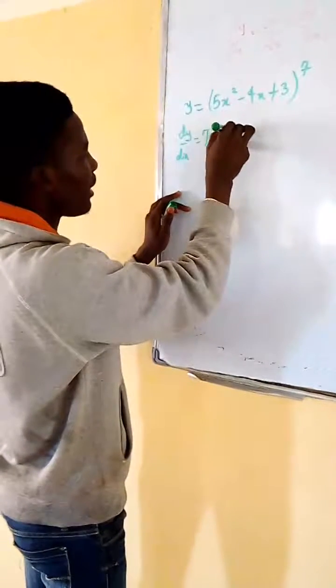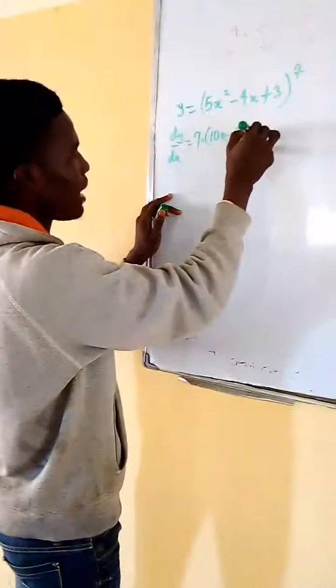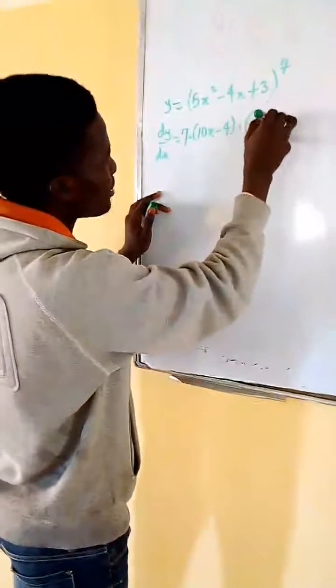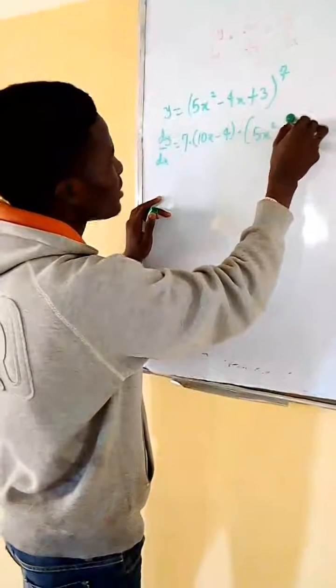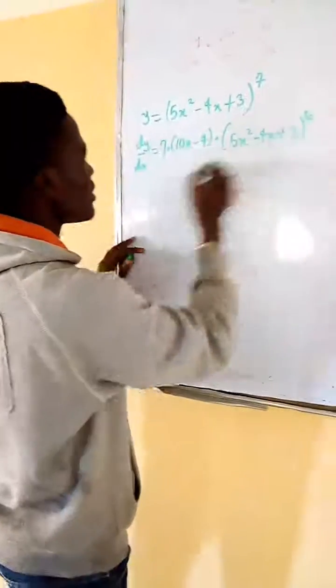you have what? 10x - 4. Then write the bracket, multiply by, write the bracket back, which is what? 5x² - 4x + 3 raised to power what? Remove 1 from the power, which is what? 6.